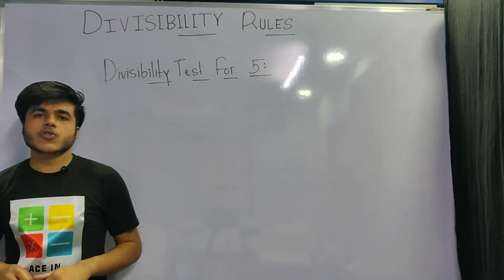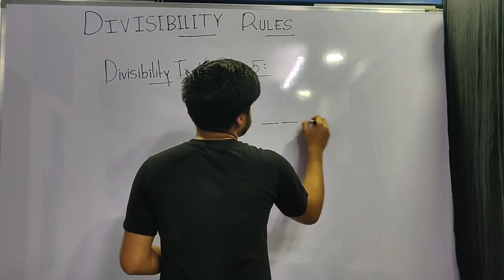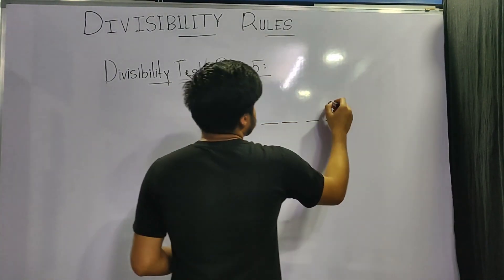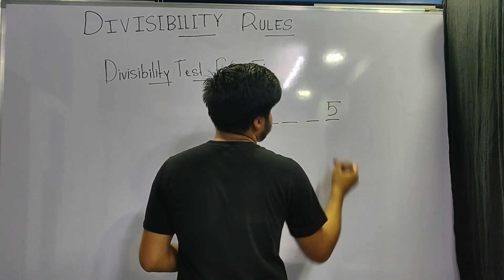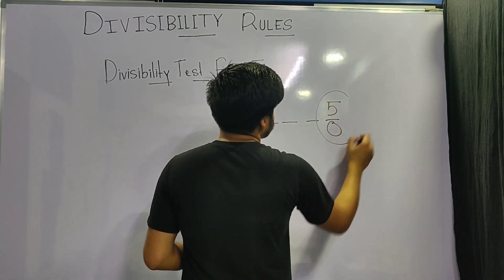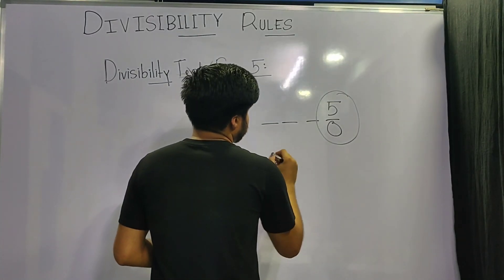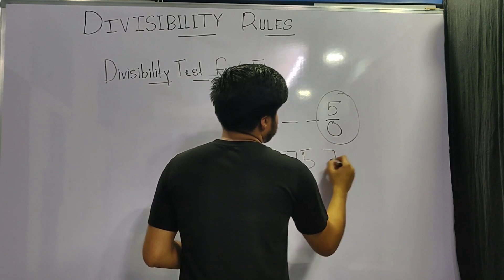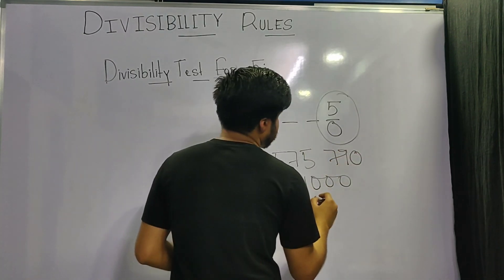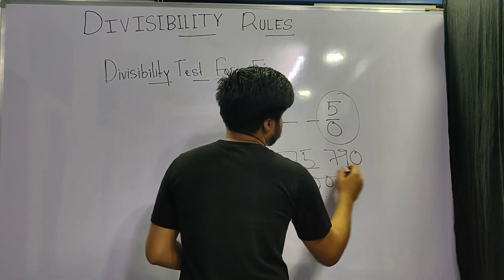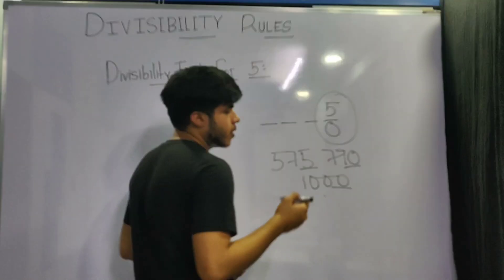Now let's learn how to check for the number 5. The rule is very simple: if the last digit of the number is either 5 or 0, the number is divisible by 5. So 575, 790, 1000, and all numbers whose last digit is either 5 or 0 are divisible by 5.